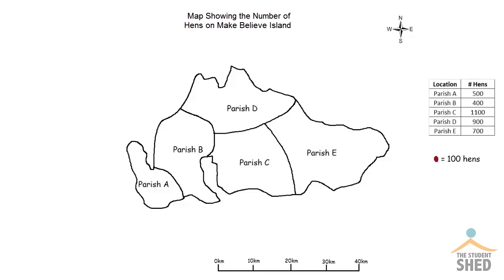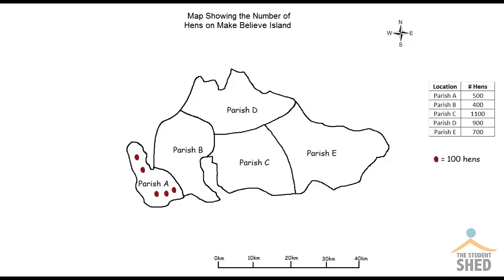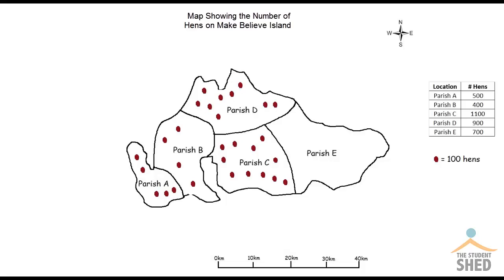We'll start with Parish A which has 500 hens, so we'll place five dots in there. Parish B has 400 hens, so we'll place four dots in Parish B. In Parish C there's 1,100 hens, so we'll place 11 dots in there. In Parish D there's 900 hens, so we'll place nine dots. And finally in Parish E there's 700 hens, so we'll place seven dots in there.